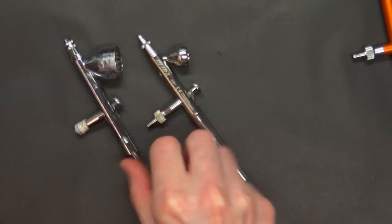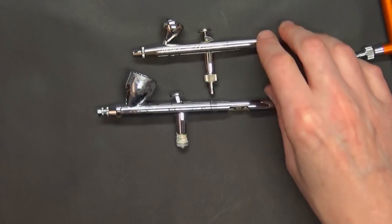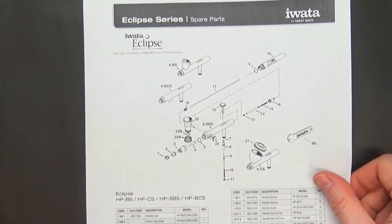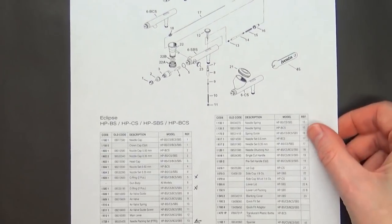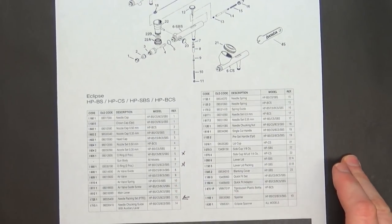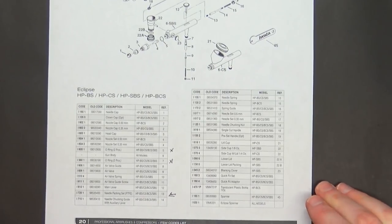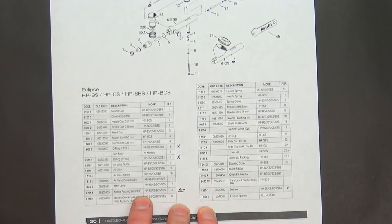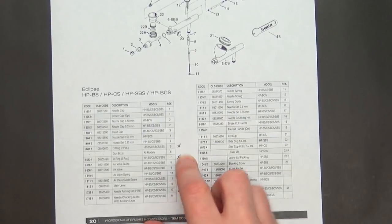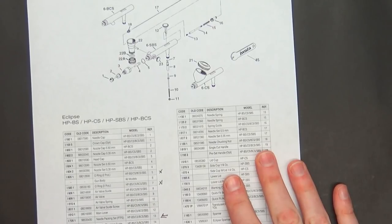First off, you can already tell the Ultra is a little bit slimmer, tighter, smaller, and definitely lighter than the Iwata Eclipse. Let's talk about the interior components. Here's the spec sheet from the Iwata Eclipse and the thing I want to draw your attention to is the seals.